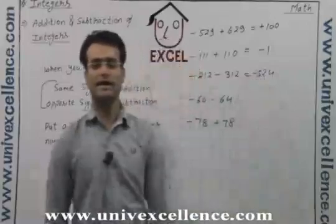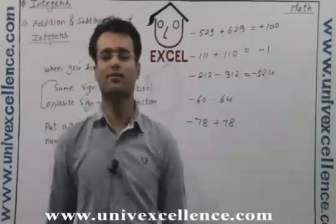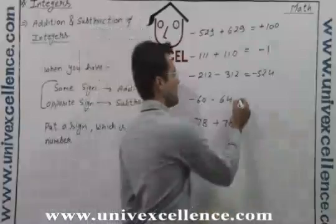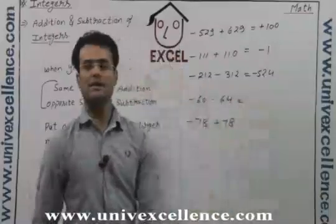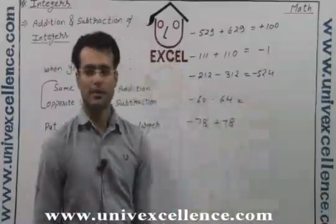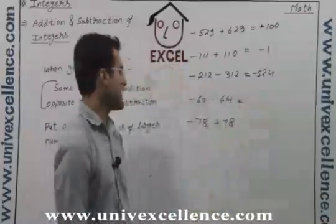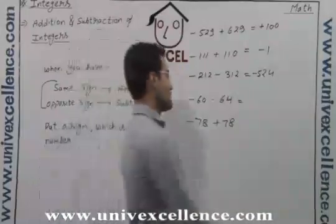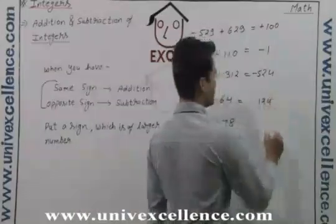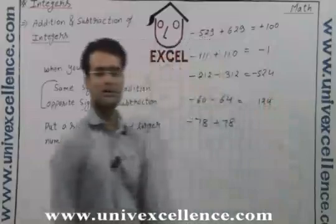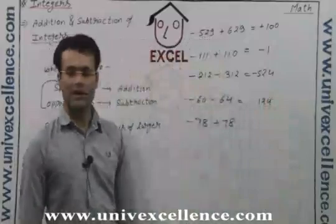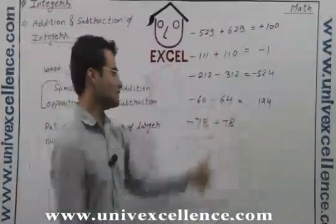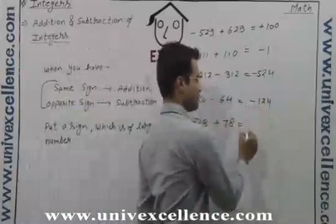So minus 524. These signs are same, so if signs are same we will do the addition, and it is 124. Now both are negative — if we choose the larger one, the sign will be negative.